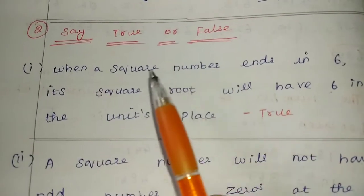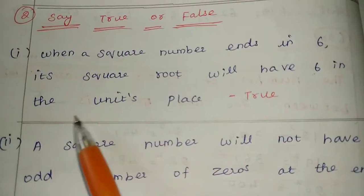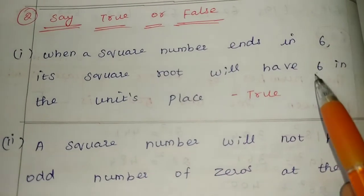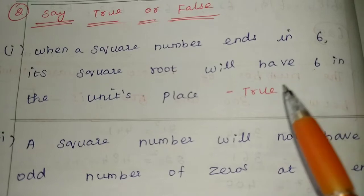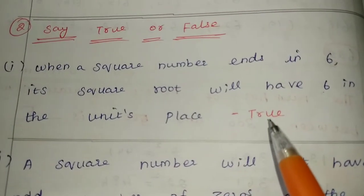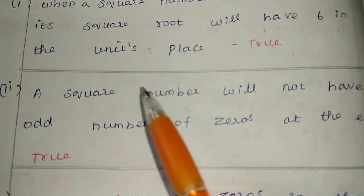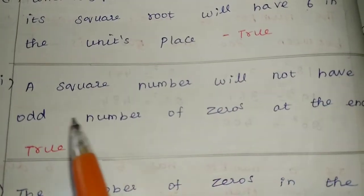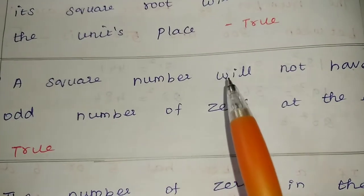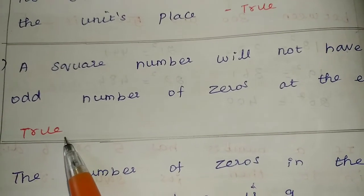Say true or false. First one: when a square number ends in 6, its square root will have 6 in the unit place. We already studied this rule — Rule 3 states that if a square ends in 6, the square root also ends in 6 in the unit place. The answer is true. Second one: a perfect square number will not have an odd number of zeros at the end. Odd zeros cannot appear; only even zeros occur in perfect squares. The answer is true.